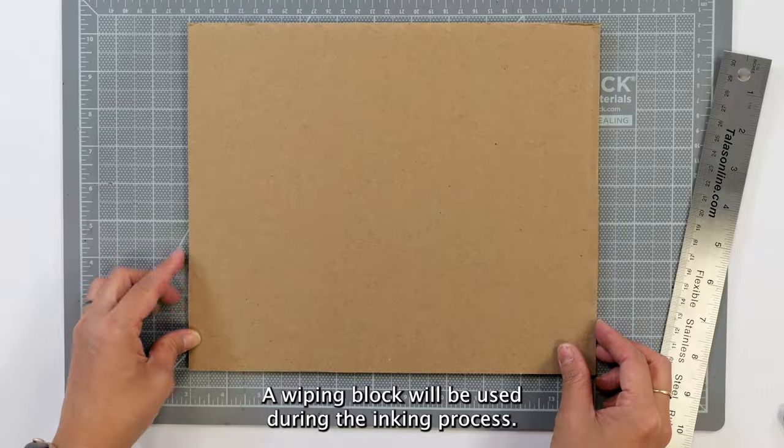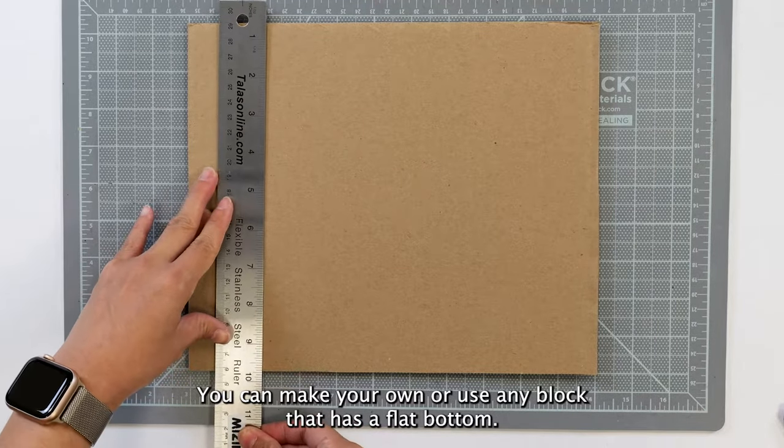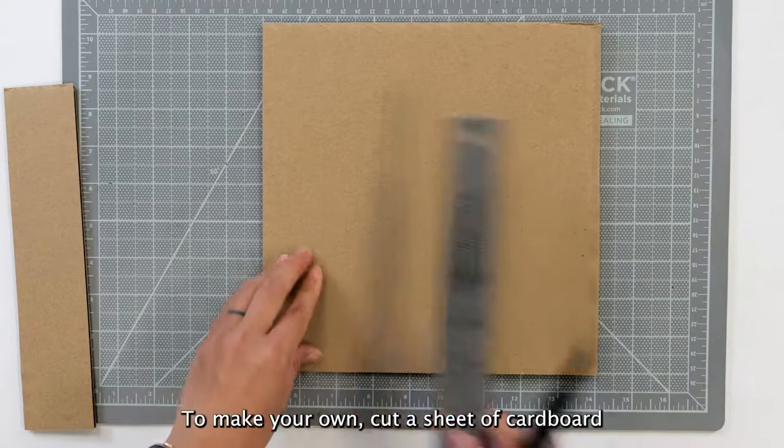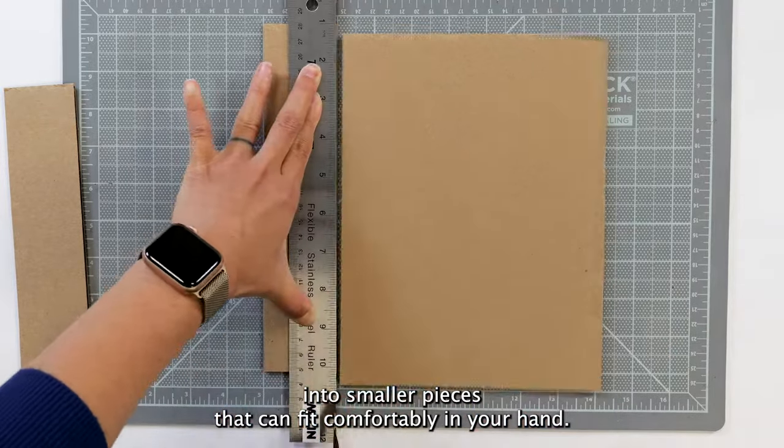A wiping block will be used during the inking process. You can make your own, or use any block that has a flat bottom. To make your own, cut a sheet of cardboard into smaller pieces that can fit comfortably in your hand.